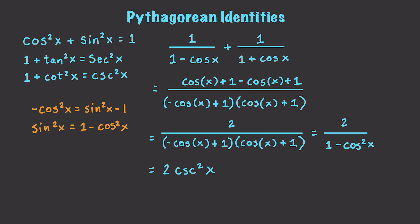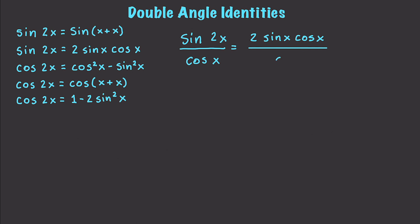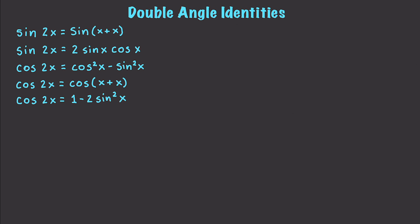Now let's talk about double angle formulas, or double angle identities. Here are our formulas — these double angle identities involve trig functions of double angles. Using those, let's solve some problems. If we have sin(2x)/cos(x), this converts using the double angle formula to 2sin(x)cos(x)/cos(x), which simply turns into 2sin(x).